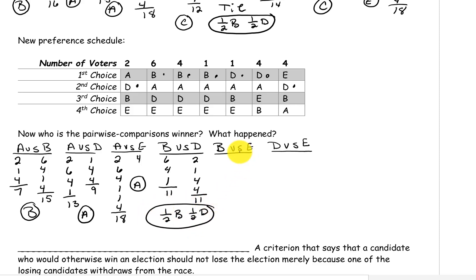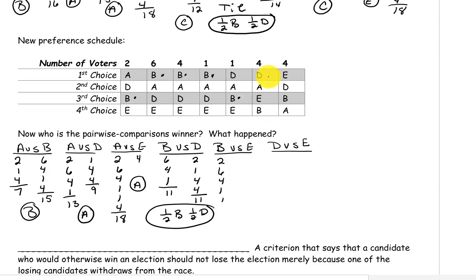Now candidates B versus E. B is above E on the first two, on the six, on the four, and on this one. Candidate B is above E on the next one. Candidate E is above B on this four and candidate E is above B on the last four. Candidate B has a total of 14 and candidate E has a total of eight, so candidate B is the winner of this pairing.